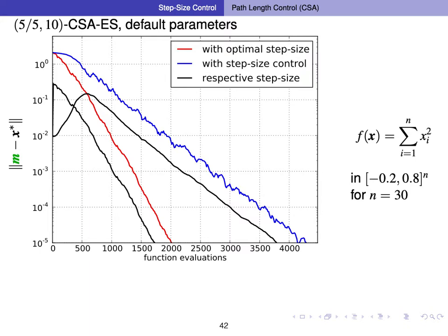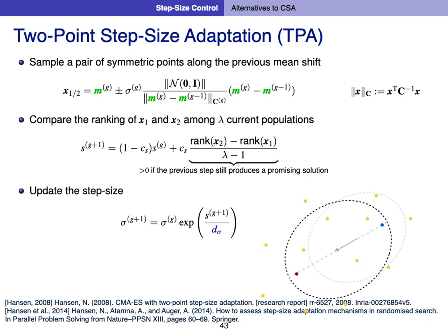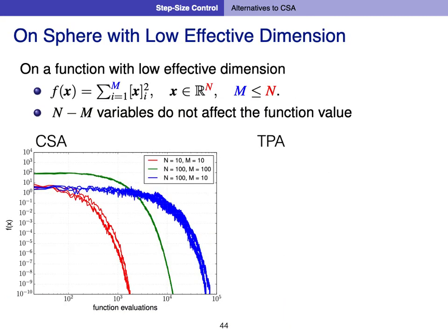Now we present another attractive way to adapt the step size called two-point step size adaptation (TPA). The idea is a very rudimentary line search in the direction of the previous mean shift, consisting of two points equidistant from the current mean. We compare the ranking between the two points: if the rank of the elongated step is better than the rank of the reversed step, we increase the step size. TPA is not the default in CMA-ES — that is CSA — but generally works well and fixes some defects observed with CSA, particularly on functions with low effective dimensionality.